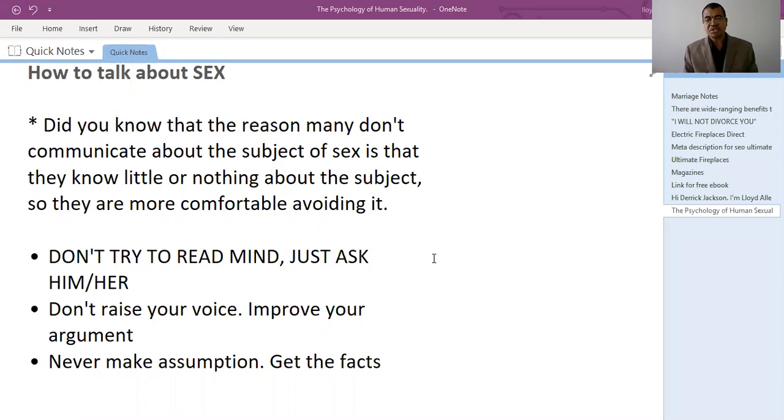The first point I want to share with you to improve your communication about sex within marriage is: number one, don't try to read mind. Just ask him or her. Why is she like this? Why is it that sex is not comfortable for her? And you start to think wild things. The best thing to do in this situation: don't try to read mind, just ask. What are you thinking? I want to be enough for you. I want to satisfy you. Can you please tell me what your needs are as it relates to sex?